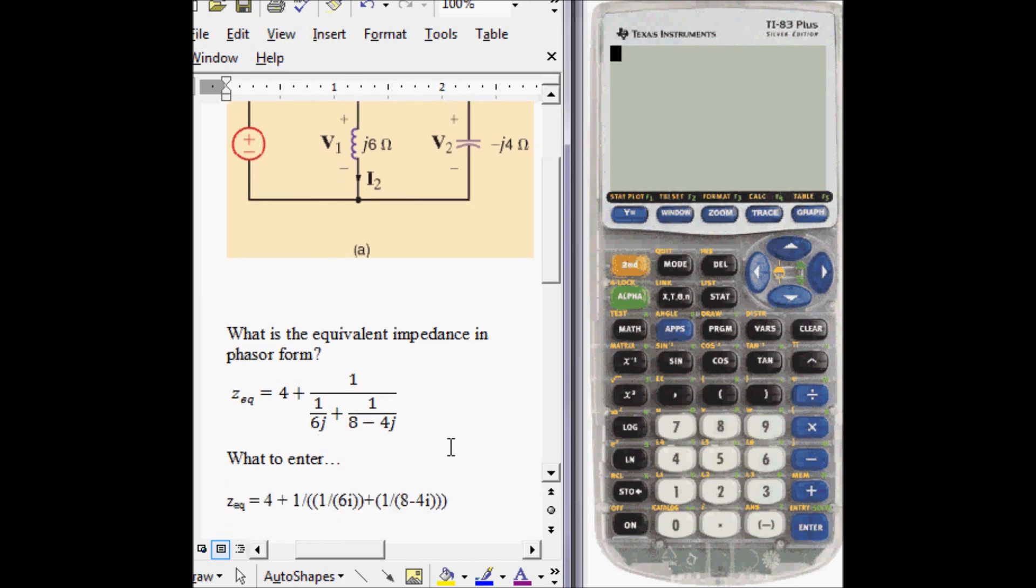So what to enter on your calculator. You'll notice that there's J's in this expression. In math we use the letter I to represent the square root of negative one. In circuit analysis we use J because I is already used for current.